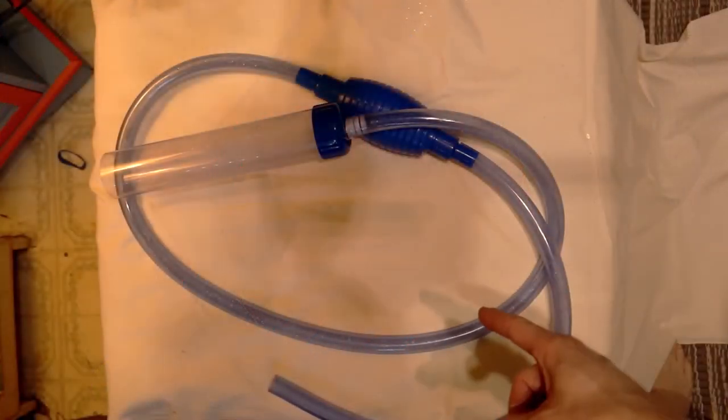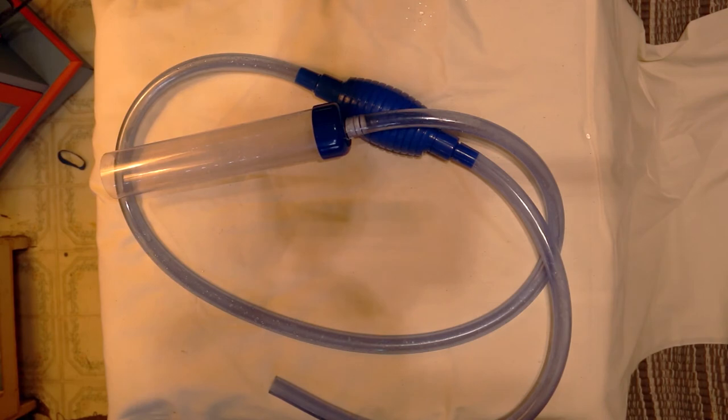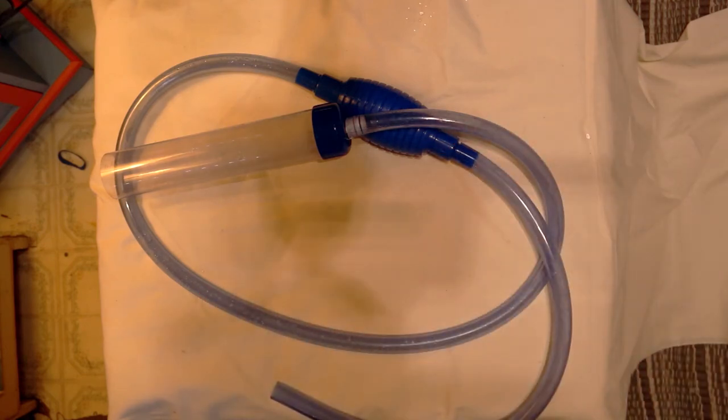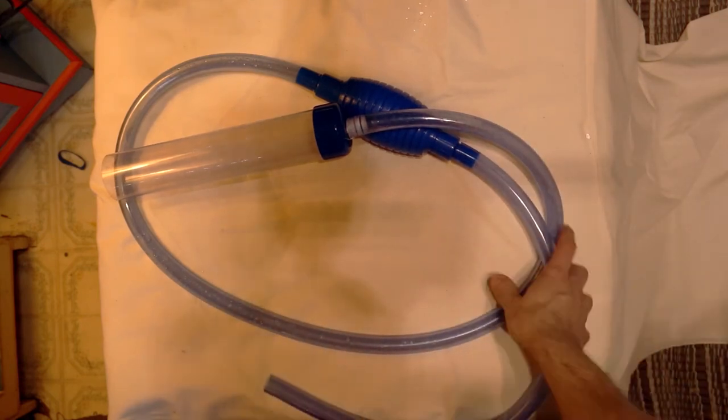Now you can also do this with gravel vacs. You just need a second bucket, and then simply siphon the hydrogen peroxide water mix from one bucket to the other a couple times, then let your gravel vac air dry, and there you have it.